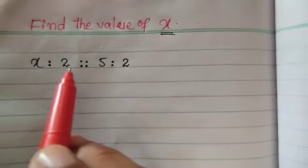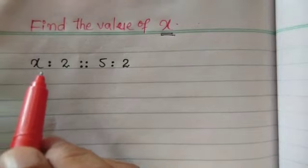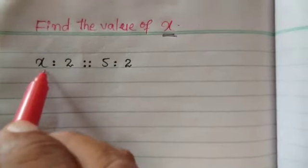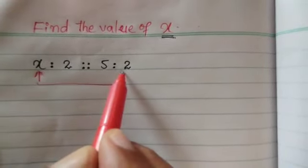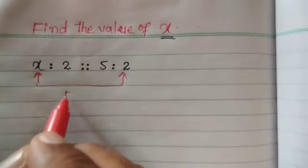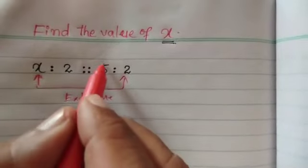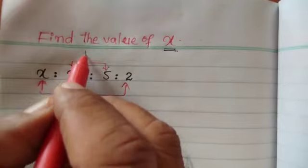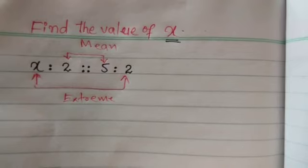Find the value of x. x ratio 2, 3 sub 5 ratio 2. We will find out — first and last, we will find the value of x. We will find the value of x by cross multiplication.